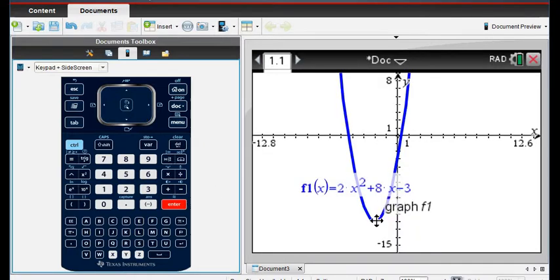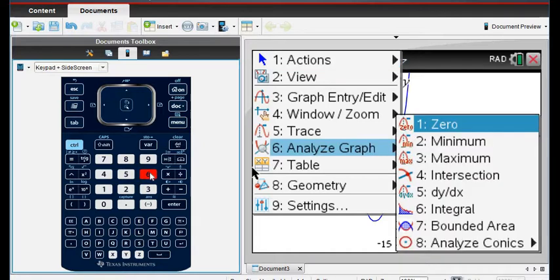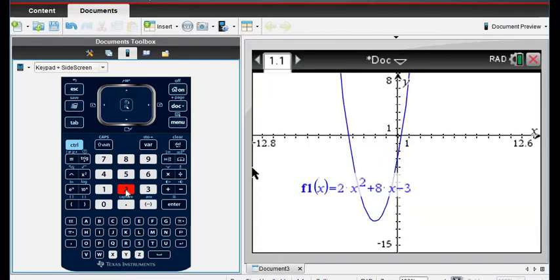So now we have our graph. We can see our lowest point, and what we want to do is use the graphing feature to find that lowest point. So if you hit the menu button and under option 6, where it allows you to analyze the graph, it allows you to find either the minimum or the maximum. So we're going to choose option 2, the minimum,